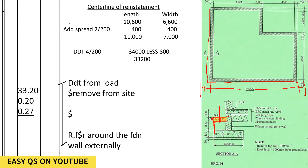We already learned how to take off the center line using the video shown on your screen, which shows how to calculate the center line. We take the external dimensions of the plan, add the spread to get the external dimensions of the spread, then deduct the number of corners times the thickness of the spread. Remember the thickness of the spread is 200.